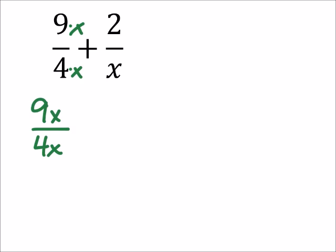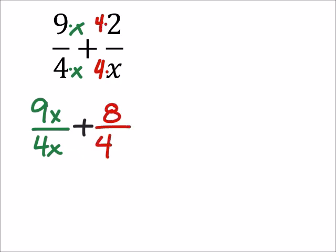And then we'll add this to x times 4. If you prefer to see that on the other side, that's fine. So 4 times x, and 4 times 2, which is 8, over 4x.